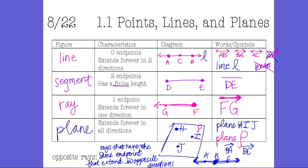They're opposite rays. When you stick opposite rays together at the endpoint, they extend in opposite directions and create a straight line — so A, B, and C all lie on the same line. Ray BA and ray BC have the same first letter because they have the same endpoint. Note that two rays sharing the same endpoint are not necessarily opposite rays if they don't create a straight line and don't extend in opposite directions.